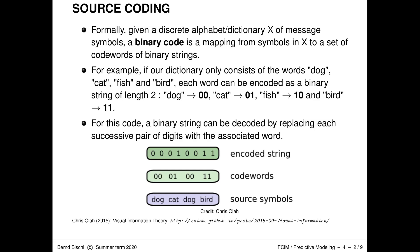We'll use a binary string encoding of always length two: dog encoded as 00, cat as 01, fish as 10, and bird as 11. We can now uniquely and precisely encode our source symbols with these code words, concatenate them, and transmit the sentence as an encoded string. At the receiving end of the channel, we can also uniquely decode by mapping these length-two strings back to the associated symbols from our dictionary.